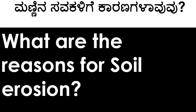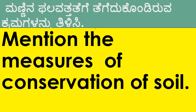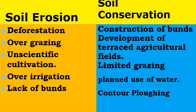What are the reasons for soil erosion? What are the effects of soil erosion? And mention the measures of conservation of soil. Causes of soil erosion: deforestation, overgrazing, unscientific cultivation, over-irrigation and lack of bunds. Measures for soil conservation: construction of bunds, development of terraced agricultural fields, limited grazing, planned use of water and contour ploughing.